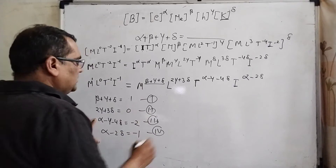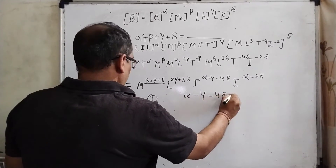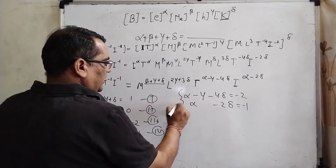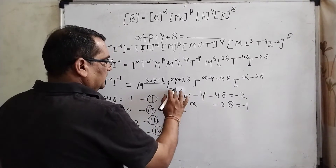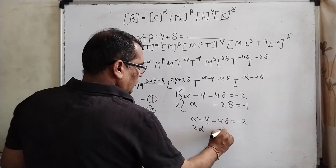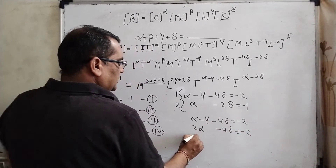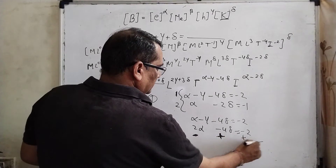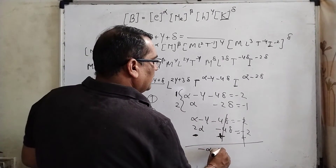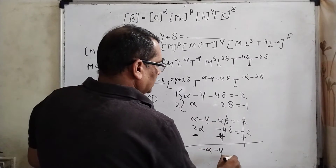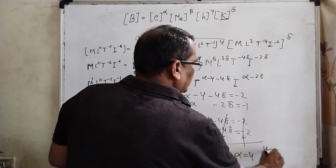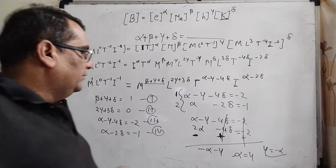Now solving these equations. From equation 3: α − γ − 4δ = −2. From equation 4: α − 2δ = −1. Multiply equation 4 by 2: 2α − 4δ = −2. Subtracting equation 3 from this: 2α − 4δ − (α − γ − 4δ) = −2 − (−2), which gives α + γ = 0, so γ = −α. This is our fifth equation.